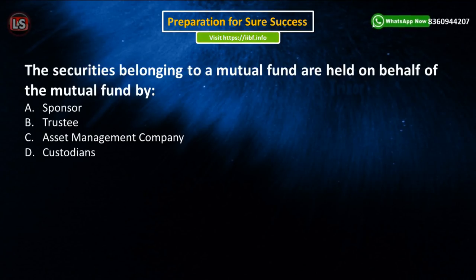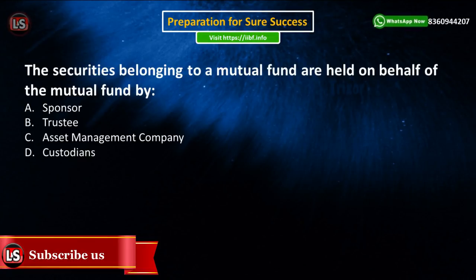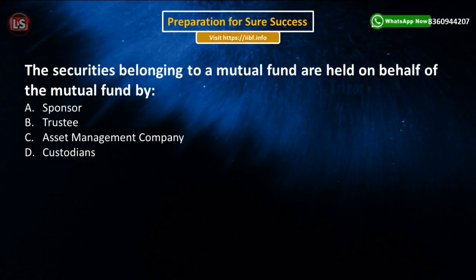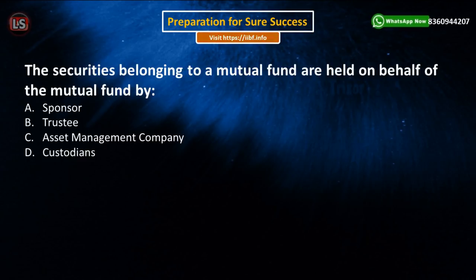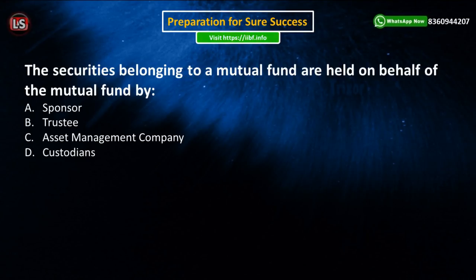Next question: The securities belonging to a mutual fund are held on behalf of the mutual fund by whom? Options are sponsor, trustee, asset management company, and custodians. A mutual fund is set up as a trust, with a sponsor, trustees, an AMC, and a custodian. The trust is established by the sponsor — who can be thought of like a promoter. The trustee holds the mutual fund property for the benefit of the unit holders.